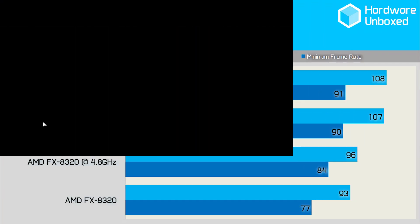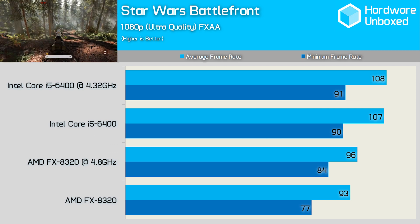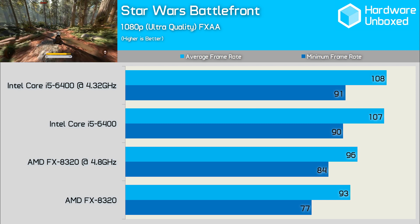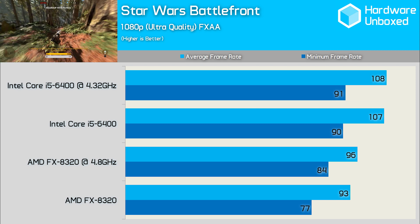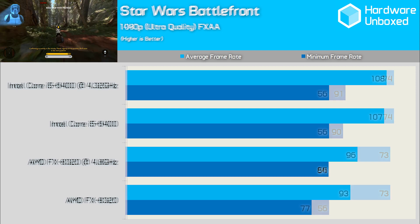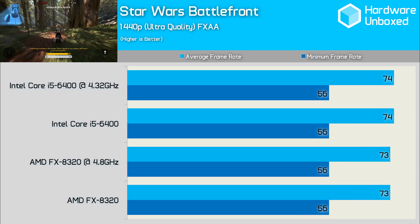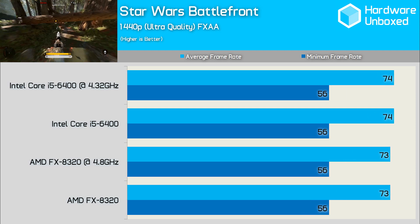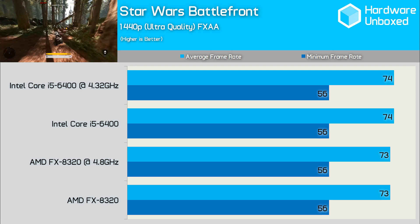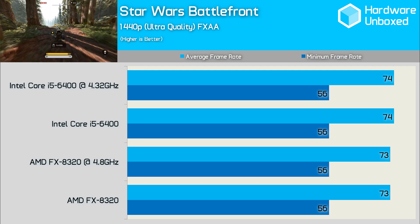The Core i5-6400 enjoyed a slight performance advantage in Star Wars Battlefront at 1080p, though it has to be said that the FX8320 was more than capable here. Upping the resolution to 1440p eliminated any performance variables, allowing the FX8320 to match the Core i5-6400.